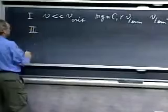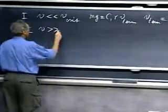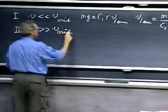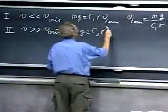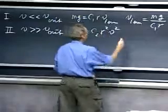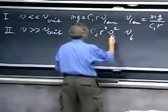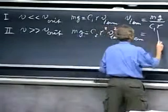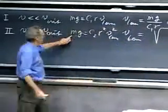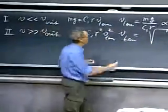Regime two is the case when v is much larger than v critical, so then mg equals c2 r squared v squared, if this is the terminal velocity. So the terminal velocity is then the square root of mg divided by c2 r squared.